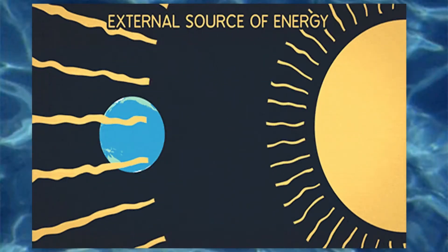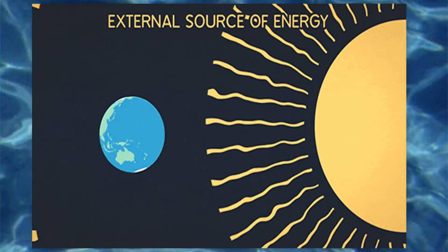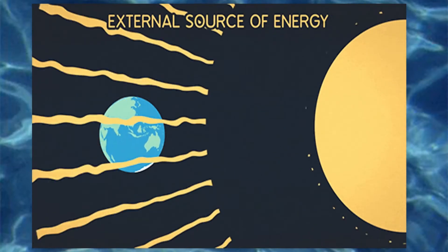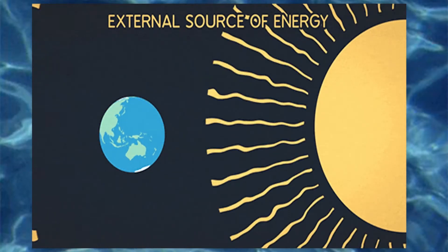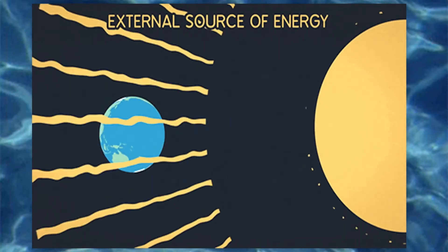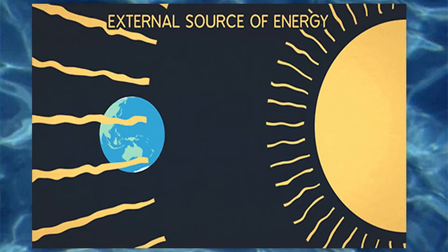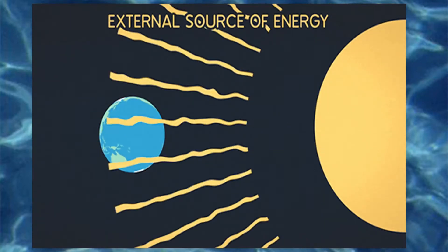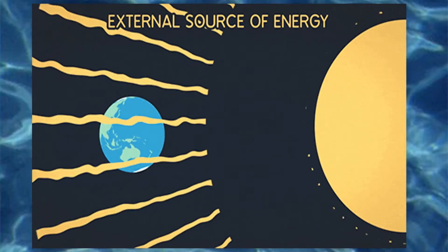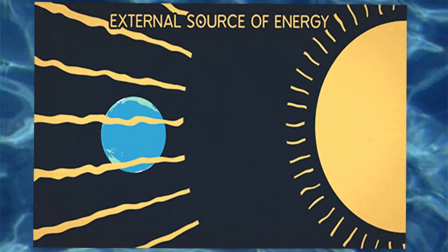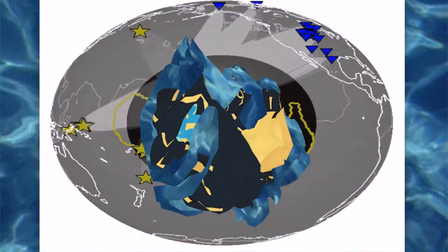These radioactive elements include uranium, thorium, and rubidium, particularly in the crust and mantle. These sources of heat cause the Earth's temperature to increase with depth to about 5,000 degrees Celsius in the inner core.